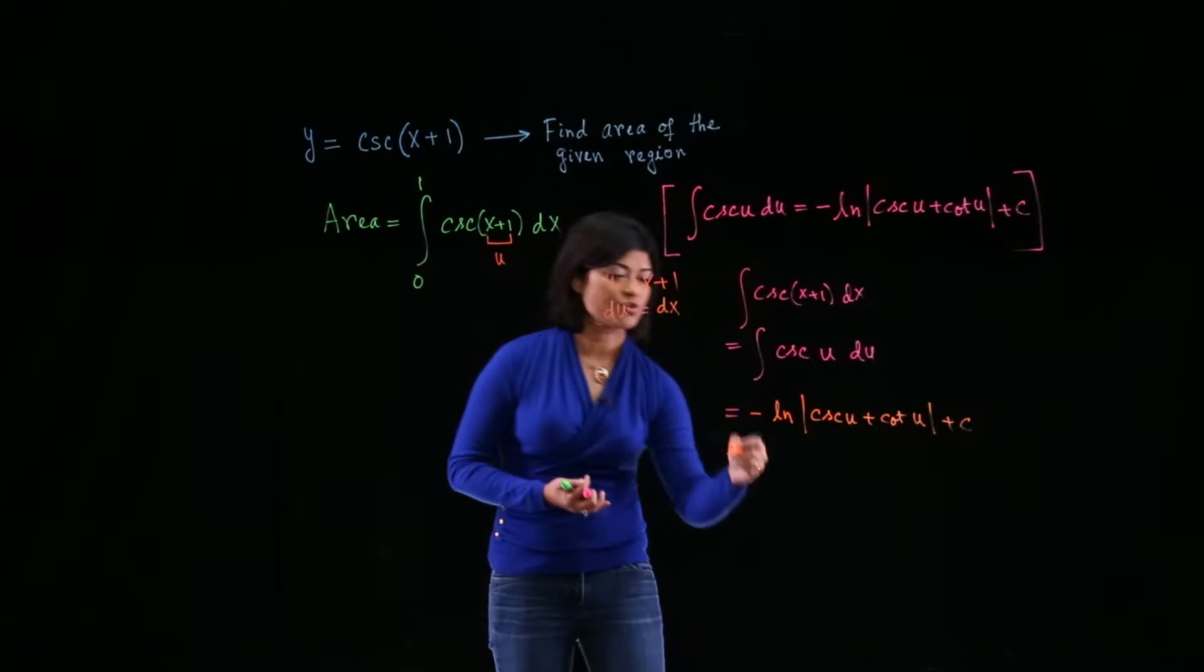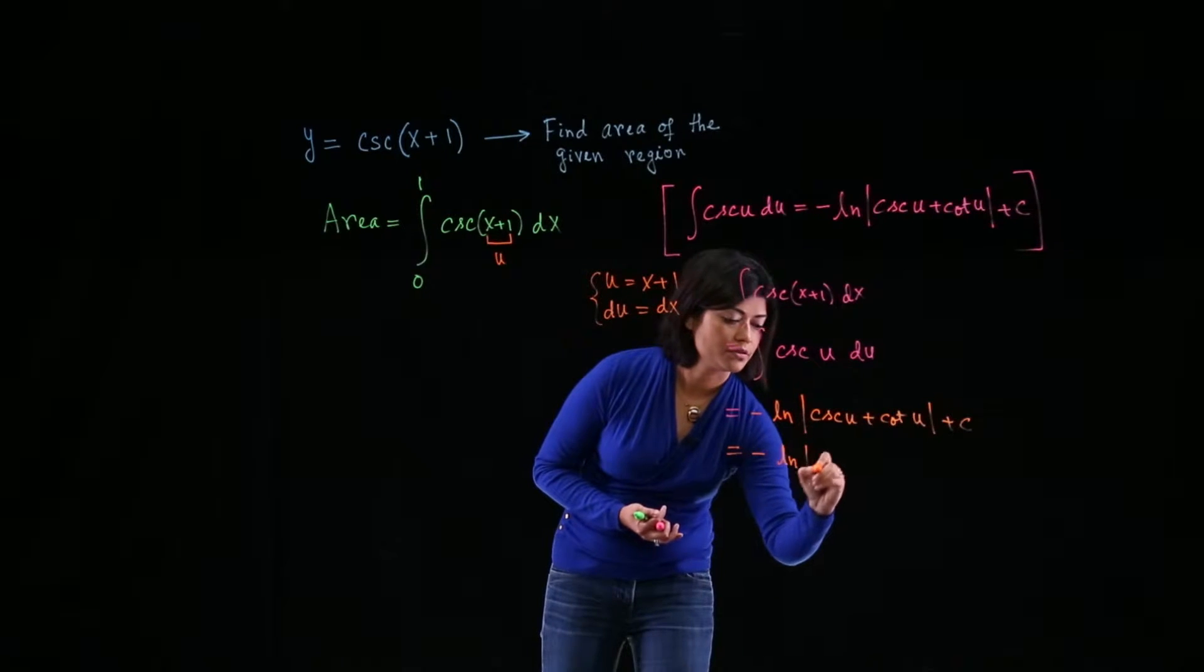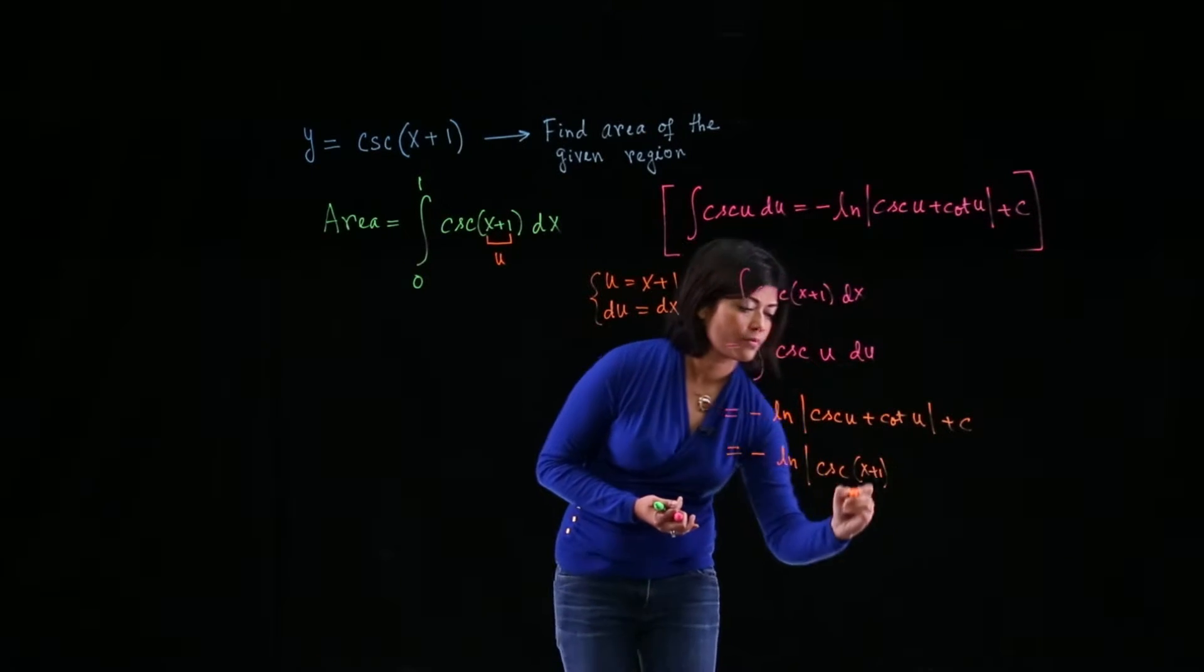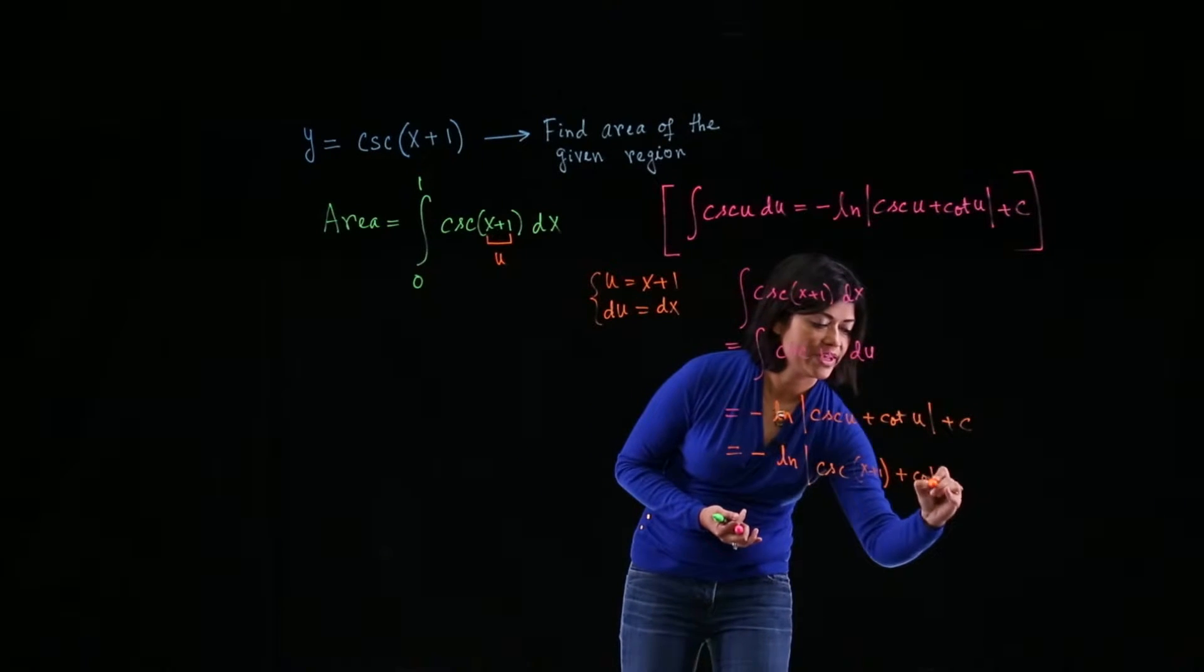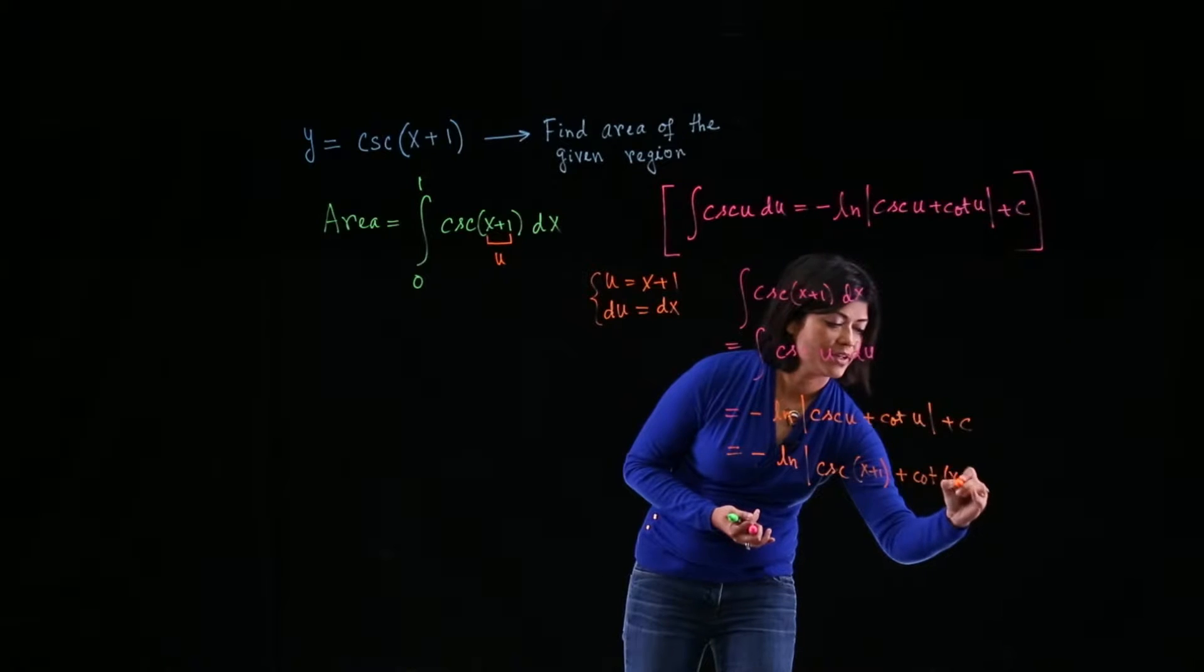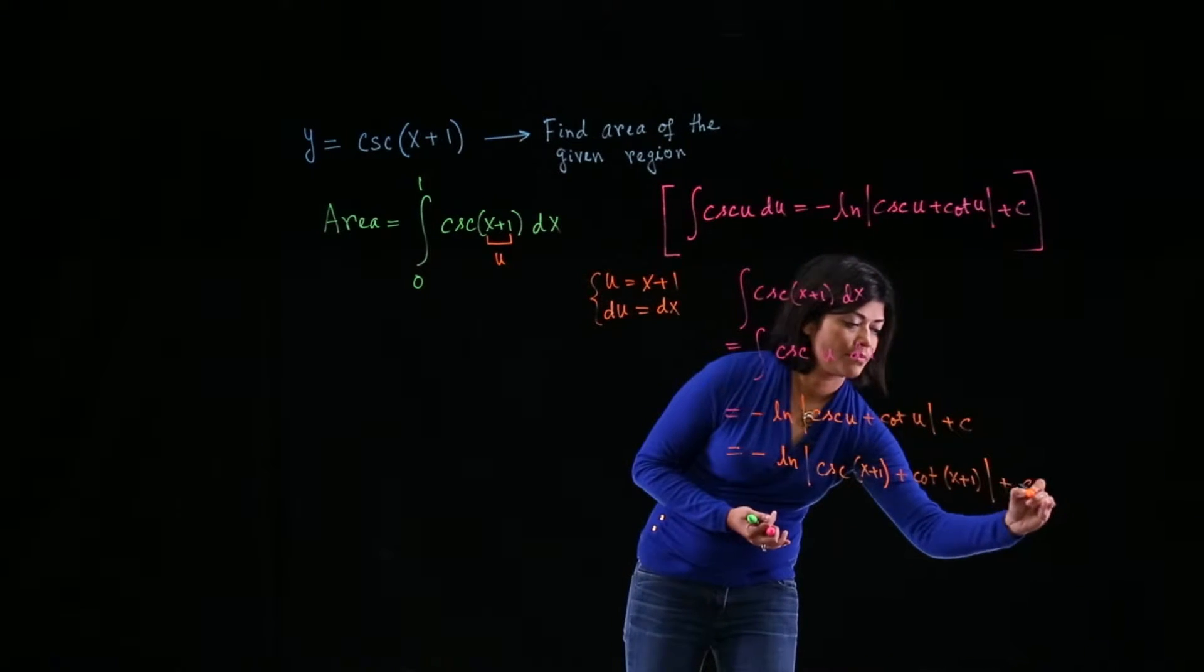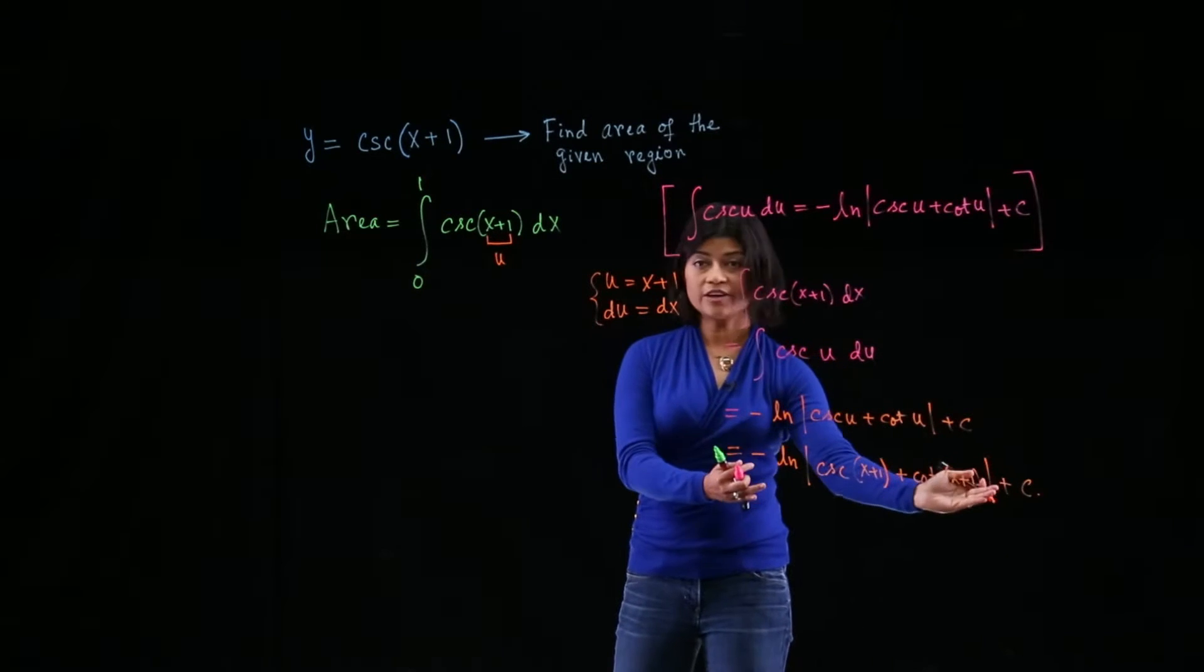Plug in u equals x plus 1. So the antiderivative is negative natural log cosecant of x plus 1 plus cotangent of x plus 1. Let's see. All right. So this is our antiderivative.